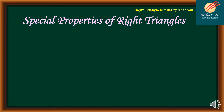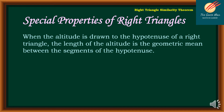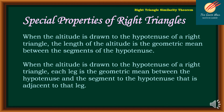We will talk about the special properties of right triangles. When the altitude is drawn to the hypotenuse of a right triangle, the length of the altitude is the geometric mean between the segments of the hypotenuse. Also, each leg is the geometric mean between the hypotenuse and the segment of the hypotenuse that is adjacent to that leg.